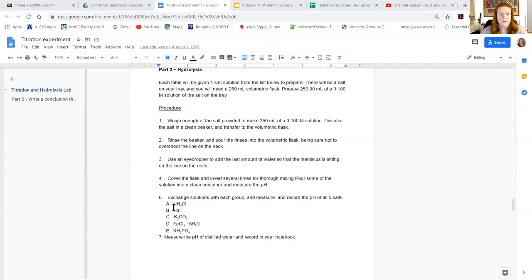Part two is normally done as a group. So in this case, what we're going to do is you each will have one of the five salts that you need to measure the pH for on your table. Okay. So these are the five salts. You have to make sure you measure all five of these before you leave lab on the day of the experiment.